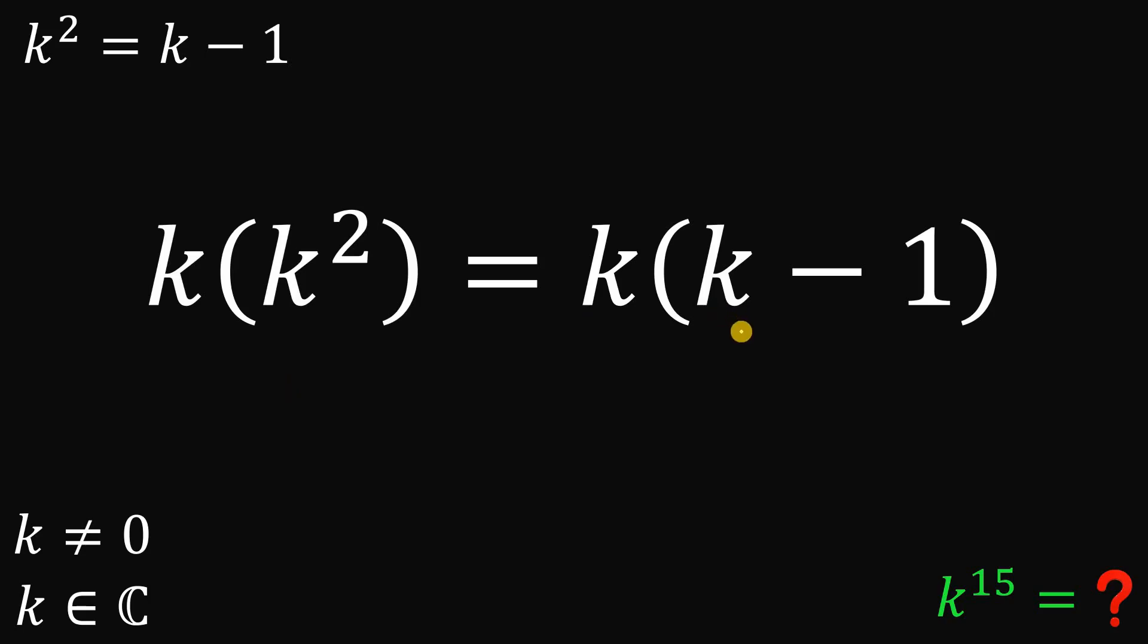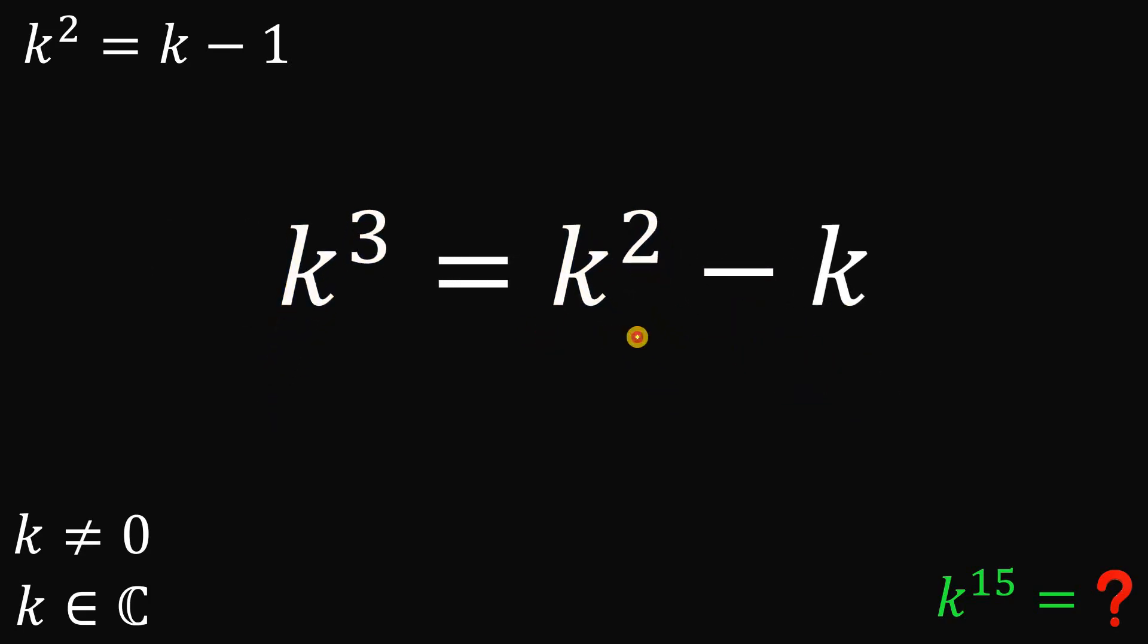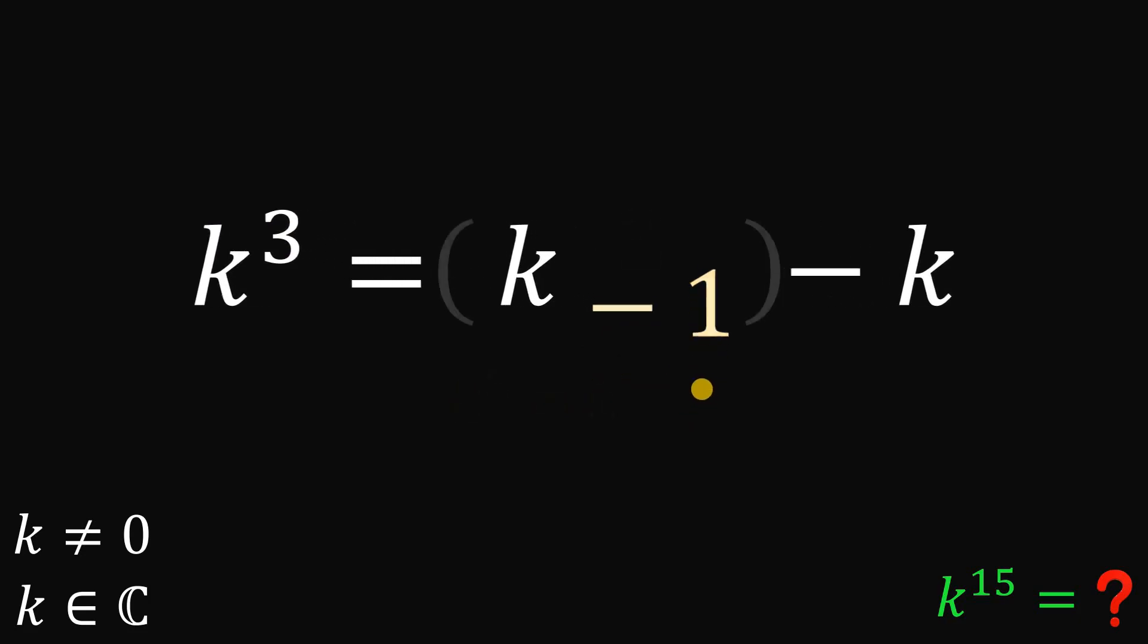The left-hand side is just k cubed. And on the right-hand side, we have k squared minus k. Now we know the value of k squared. This is just k minus 1. So we can replace this k squared with k minus 1.